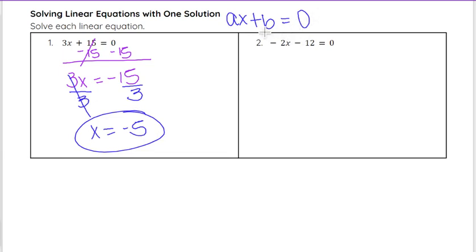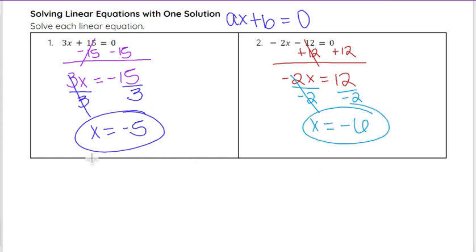Now following the same pattern on number 2, we get rid of that constant on the left side by doing the opposite. So we add 12 to both sides, so we get negative 2X equals 12. Then we divide both sides by negative 2 to isolate the X. Negative 2 divided by negative 2 cancels out, and we have X equals negative 6, and that is our solution for number 2.